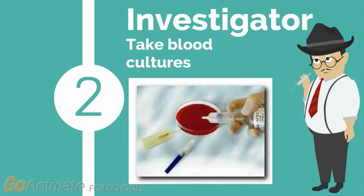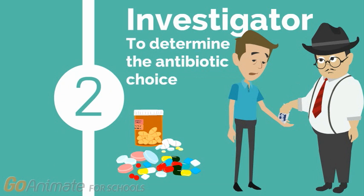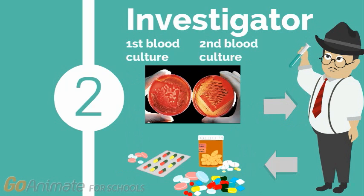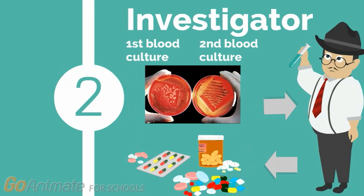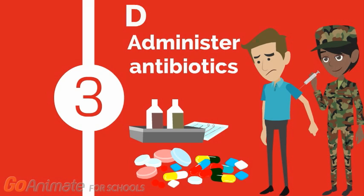Meet Sepsis 2, aka the Investigator. Sepsis 2 involves taking blood cultures in order to help identify the antibiotic choice. Typically, two blood cultures are collected from two different sites of the body. These blood cultures are examined to help identify the body's sensitivity to antibiotics and determine the most appropriate antibiotic regimen to avoid complications.